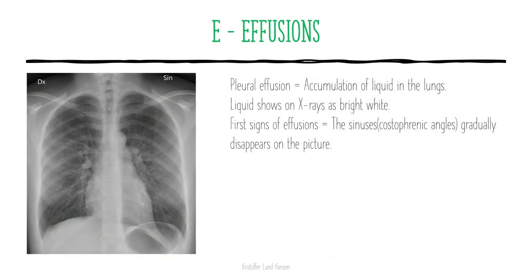E stands for effusions. We are looking for pleural effusions, which means accumulation of liquid in the lungs. These effusions may be large or small, and may come from different causes like infections, heart insufficiency or pulmonary hypertension. Large pleural effusions are usually very easy to see as they take up a huge portion of the bottom part of the lung. The smaller ones are harder to see — they take up the sinuses. Liquid shows up on x-rays as bright white, and the first signs of effusions are that the sinuses gradually disappear on the pictures.